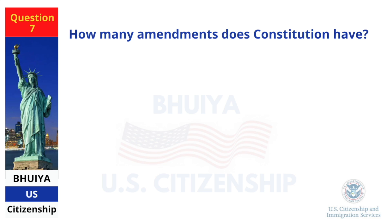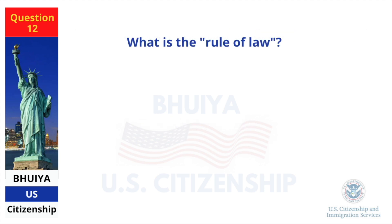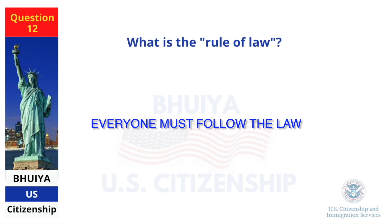How many amendments does the Constitution have? 27. What is the rule of law? Everyone must follow the law.